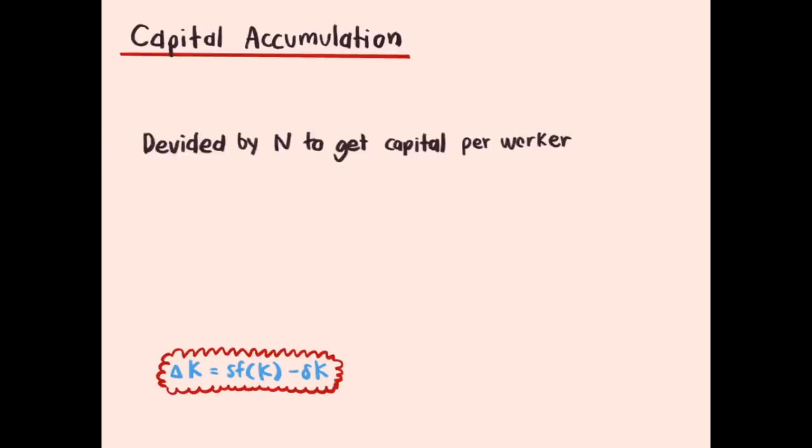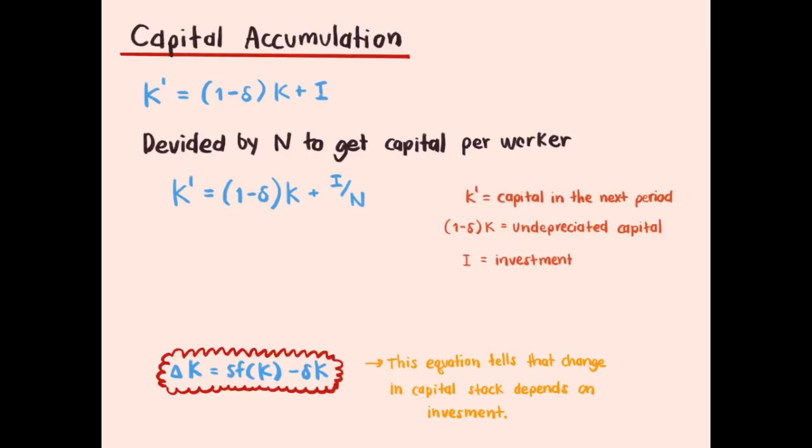After we divide the equation by N, we will get capital per worker which is small k or K over N. As we know that at the market equilibrium, investment equals saving, which makes investment also equal to saving per worker or saving rate multiplied by income or output. Therefore, when we divide N through the equation, we will get output per worker from Y over N.